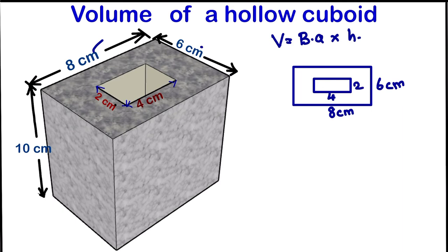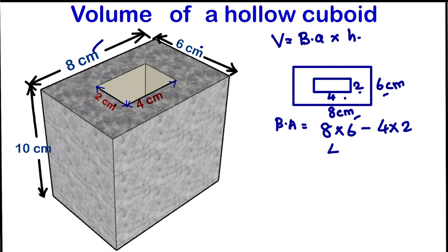So if we want to calculate the base area, the base area will be the area of the big rectangle, which is eight times six, minus the area of the smaller rectangle, which is four times two. So eight times six gives us 48, minus four times two which is eight. If we subtract it, we get 40. So the base area is 40 centimeters squared.